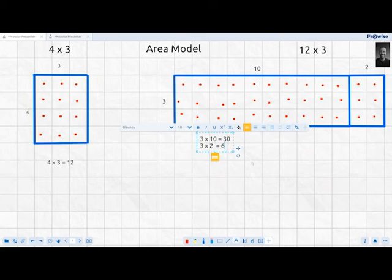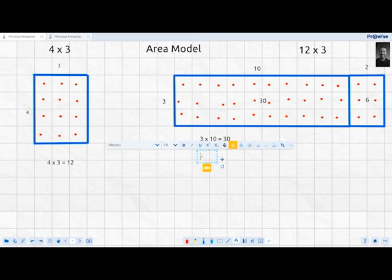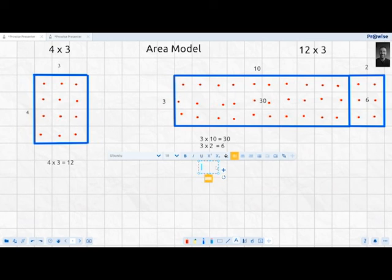We've got our 30 and our 6. All we have to do is add our two areas together. I've popped the areas into the two rectangles on the actual working out. We have 30 plus 6 to figure out our final answer. I'm sure many of you have concluded that it is 36. Therefore, 12 times 3 equals 36.